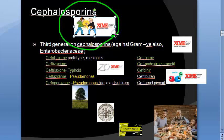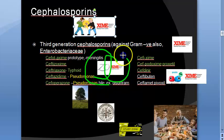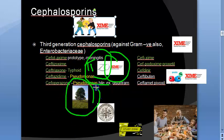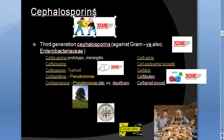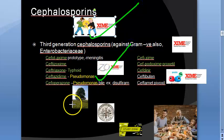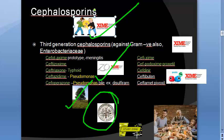For third generation parenteral drugs, the prototype is cefotaxime. Remember 'taxime.' Then there is ceftizoxime. And ceftriaxone — remember the 'tree' visual — which is used for typhoid treatment. Ceftriaxone is the most reliable and fastest for typhoid treatment, though it is an expensive drug.